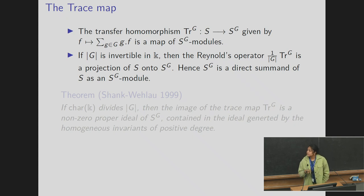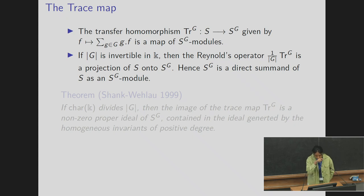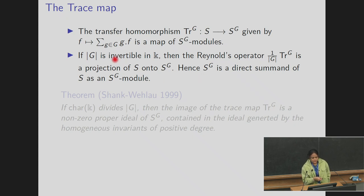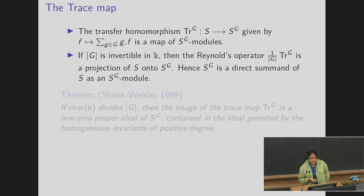Let us compare the modular situation with the non-modular case. We now introduce a very important homomorphism in invariant theory: the trace homomorphism. This transfer homomorphism from S to S^G is given by f mapping to the sum of its orbits, and it is a map of S^G-modules. If the order of G is invertible we can average by the order of G, giving a projection of S onto S^G; therefore S^G is a direct summand of S as an S^G-module, and the image of this trace map is all of the invariant ring.